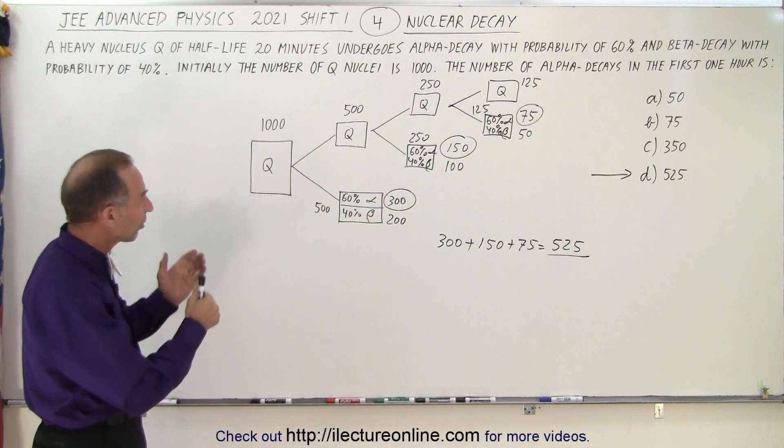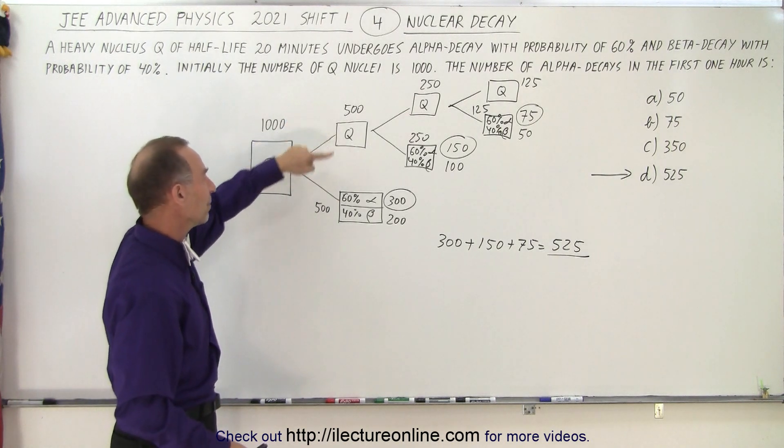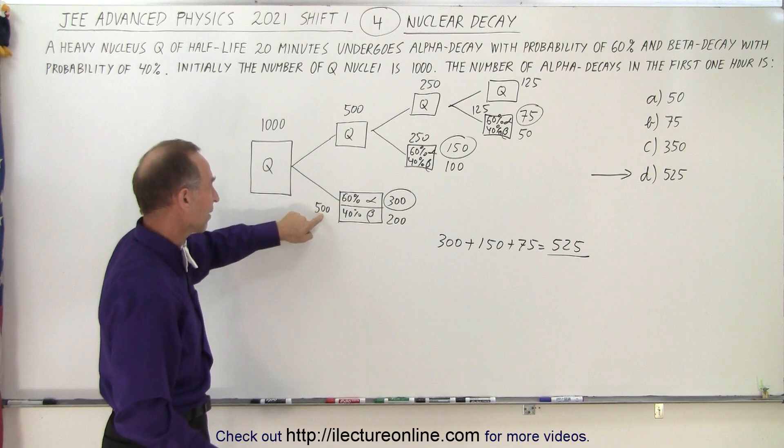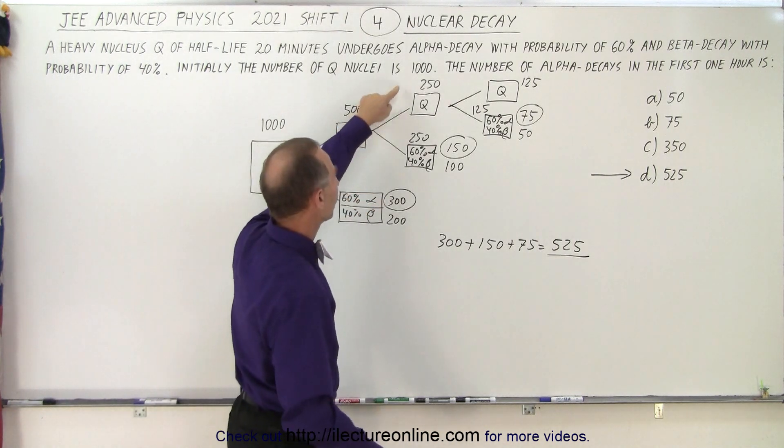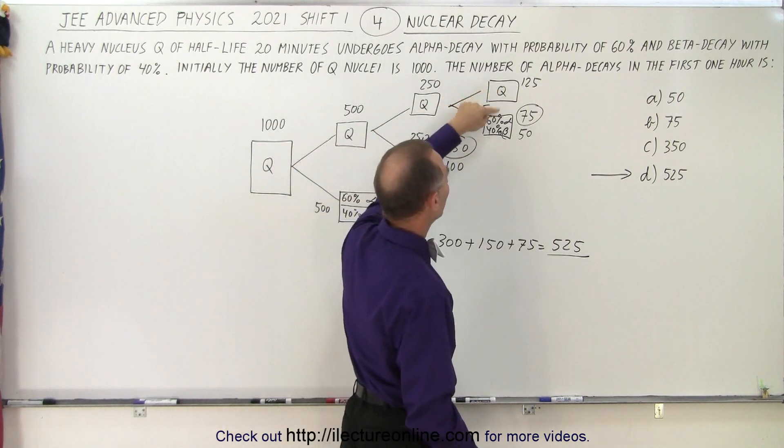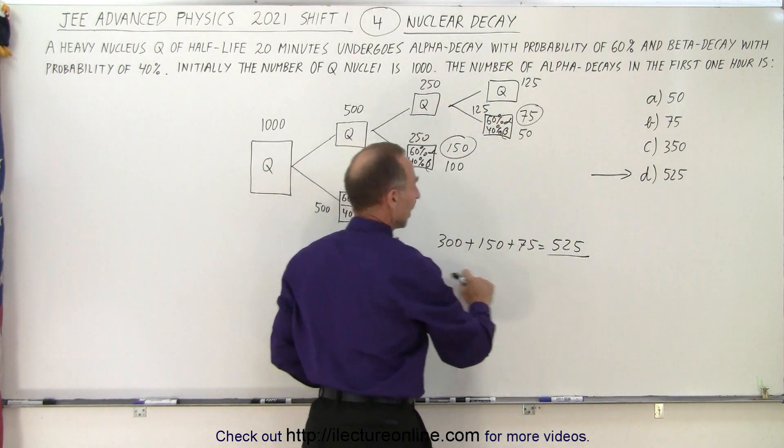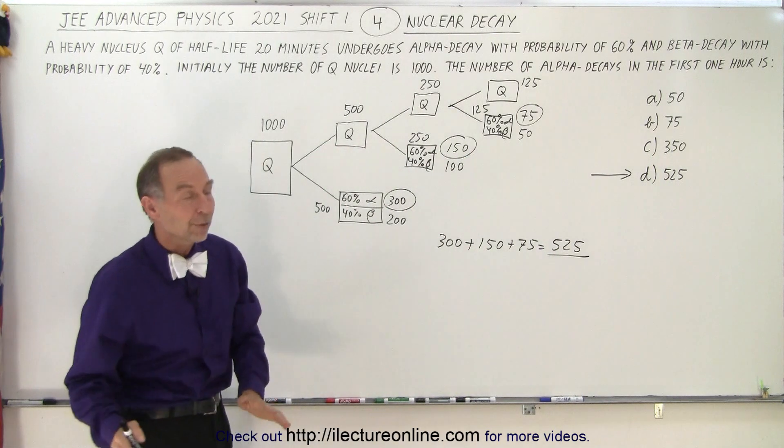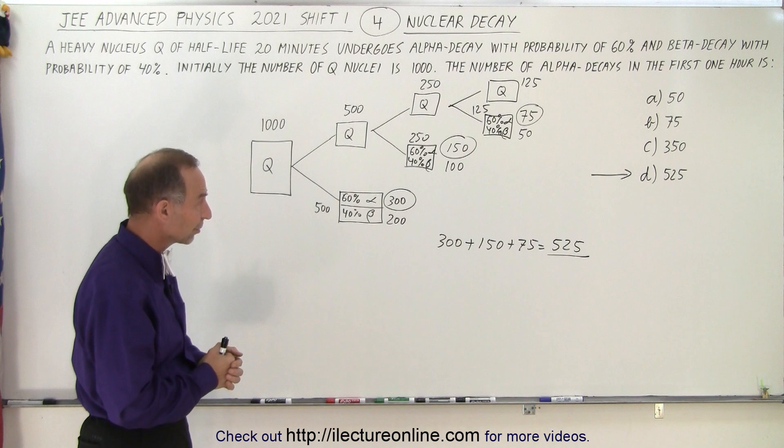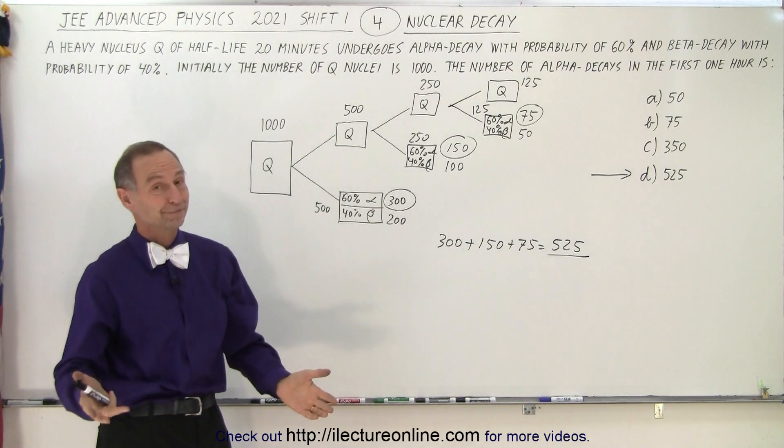So no fancy equations, just simply understanding that each time we have a half-life, half will remain the same, the other half will decay in a 60-40 split. 60% of 500 is 300, then it splits to 250-250, 60% of 250 is 150, then it splits again to 125, 60% of 125 is 75. Add the three together, adds up to 525, and those are the number of alpha decays that the sample will have experienced from the very beginning of the first three half-lives. And that is how it's done.